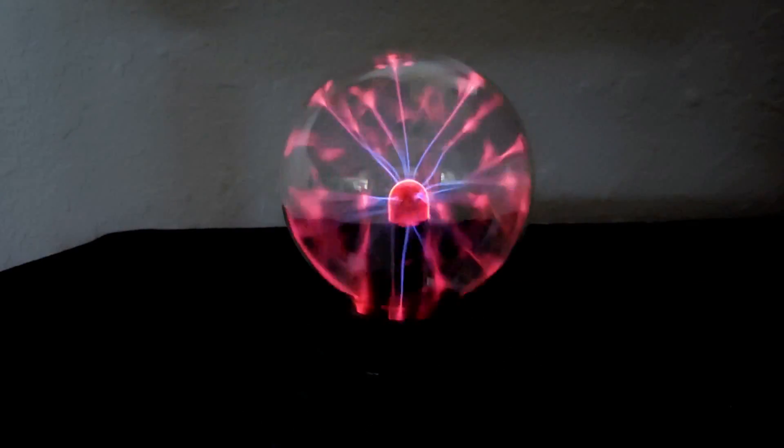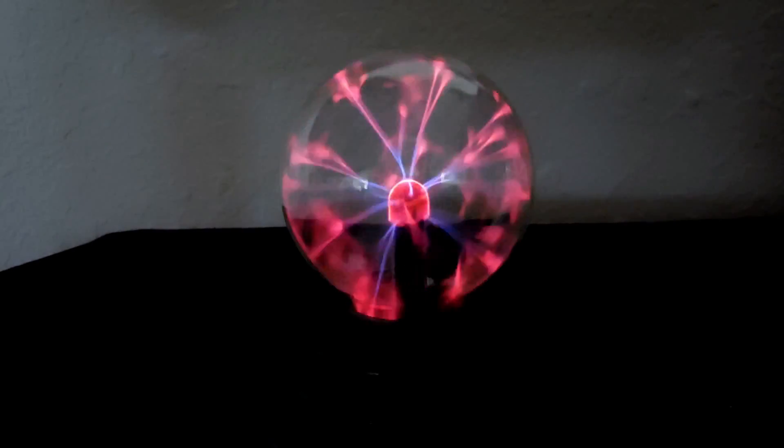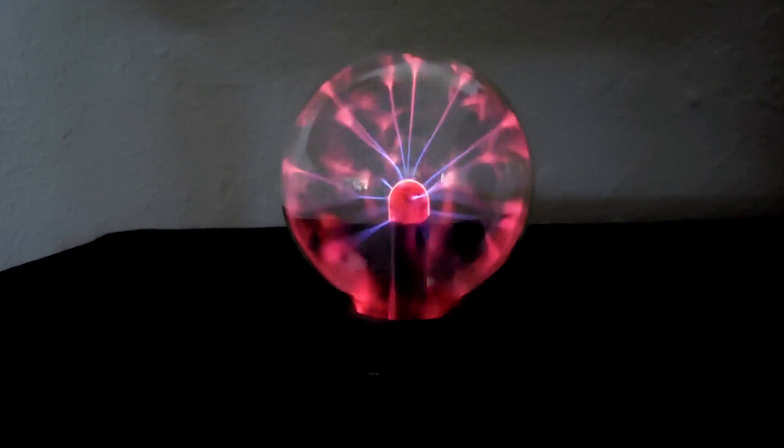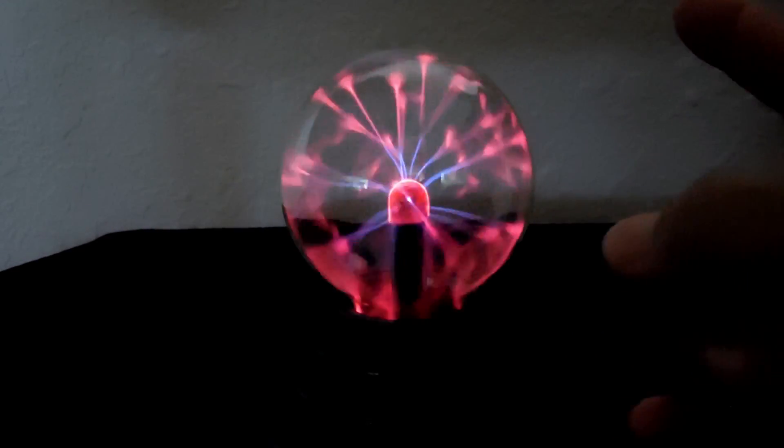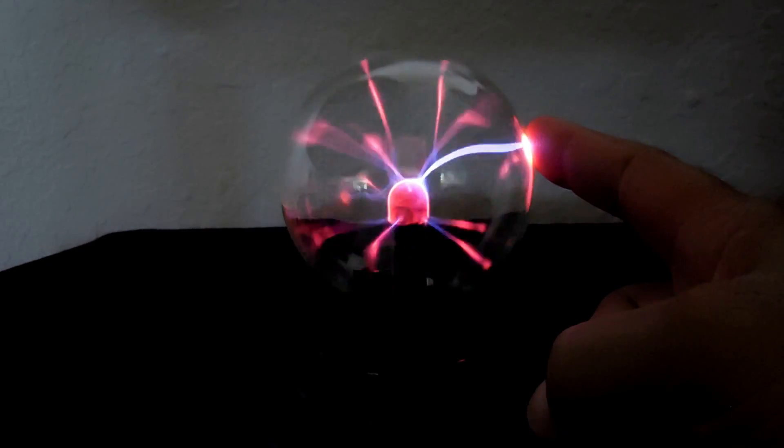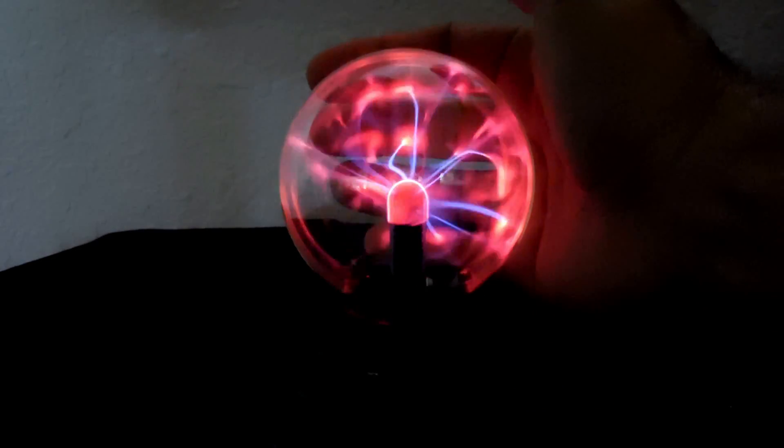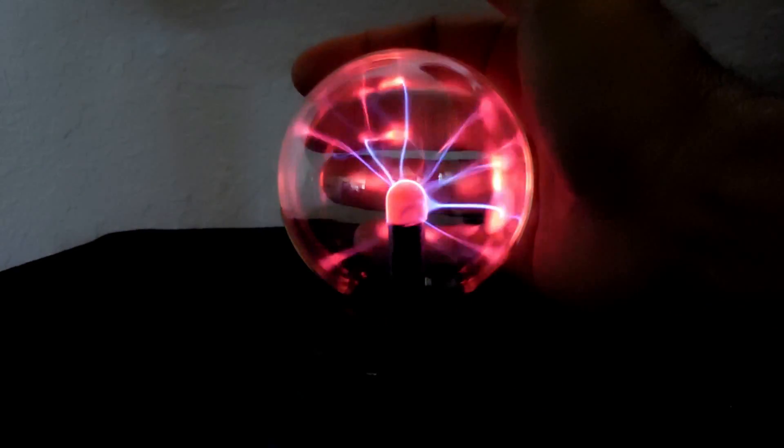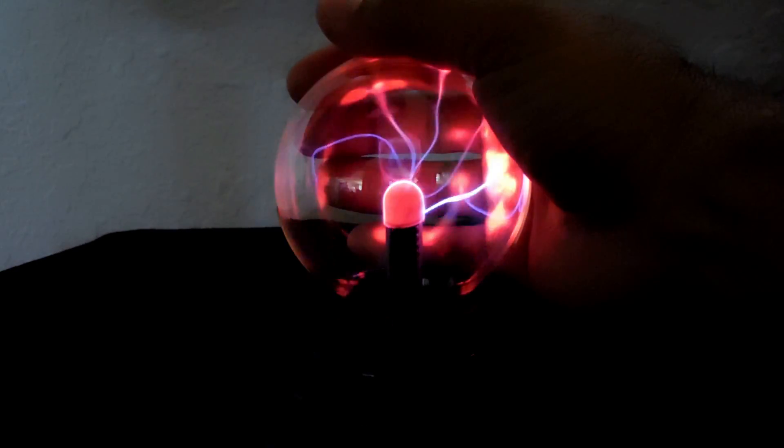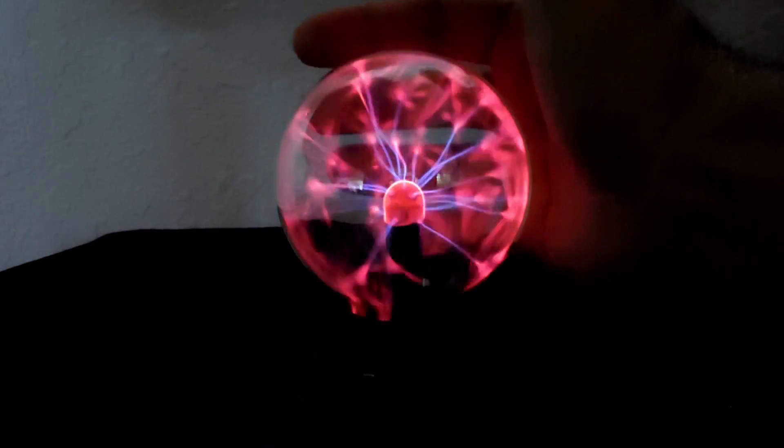Now that it's on, you can see the very cool pattern it puts out. When I touch the glass with my hand, you will not feel any shocks because you have the insulating layer of glass. I am grounded, so it's going to be attracted to my body. And it does feel very warm in my hand.